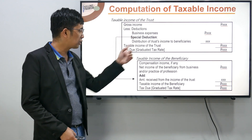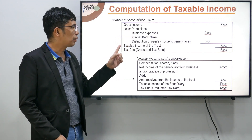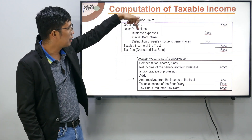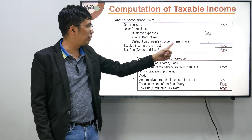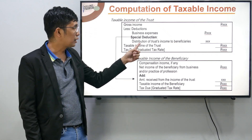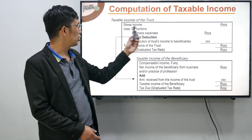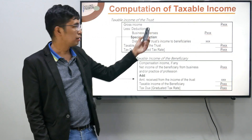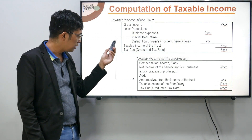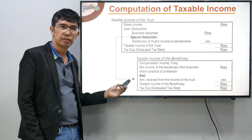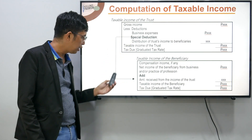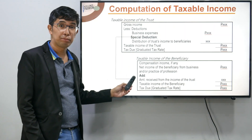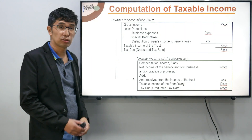Pansinin yung arrow: kung may portion ng income si trust na i-distribute sa beneficiary, sabi natin ay OPEX yan ni trust — kasi yung less deductions — pero i-co-consider na magiging parte ng taxable income ni beneficiary. Ganon lang naman yan.